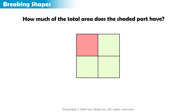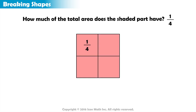So this shaded space represents the area of one out of four equal areas, or in other words, one-fourth of the total area. Combining the areas in all the four smaller parts will give us our original total area.